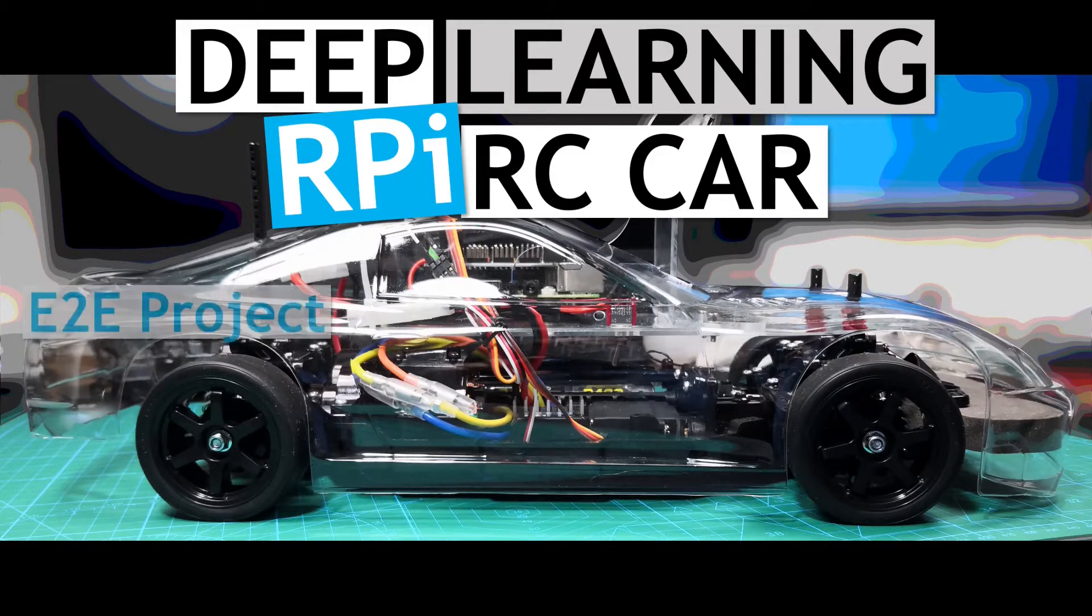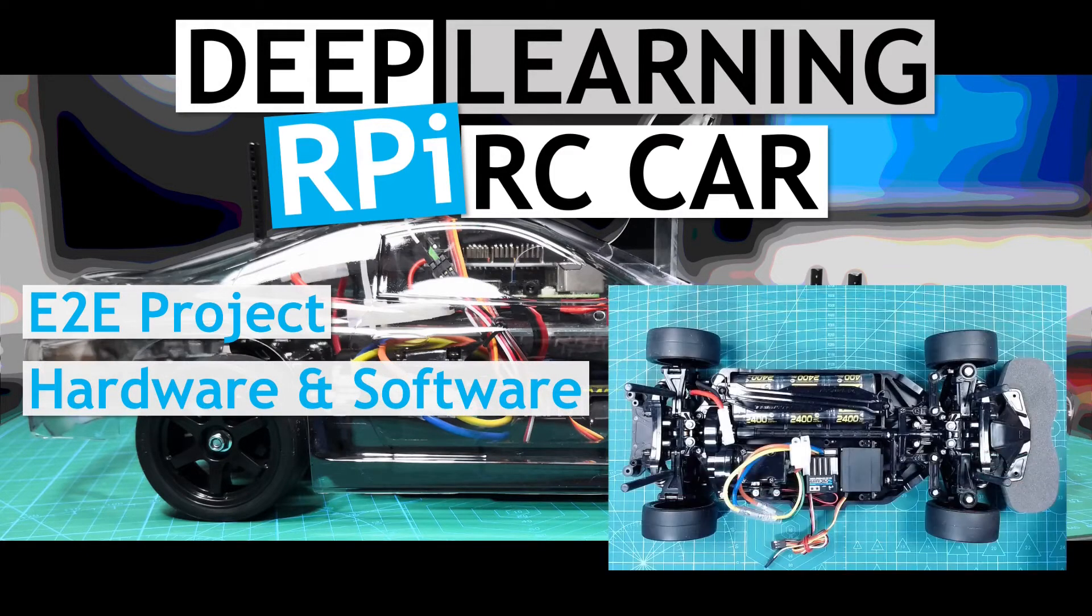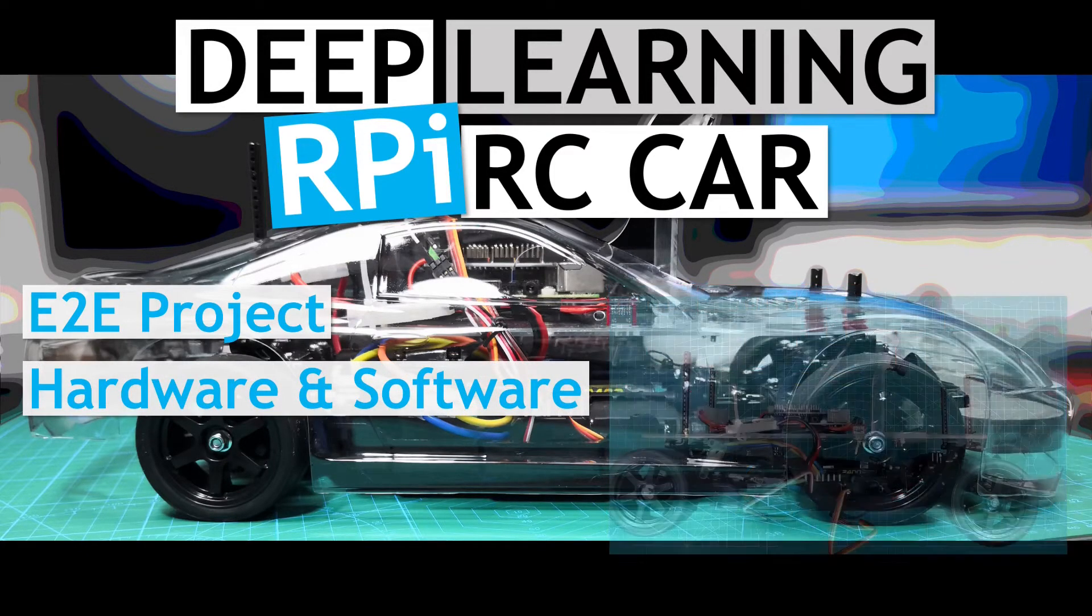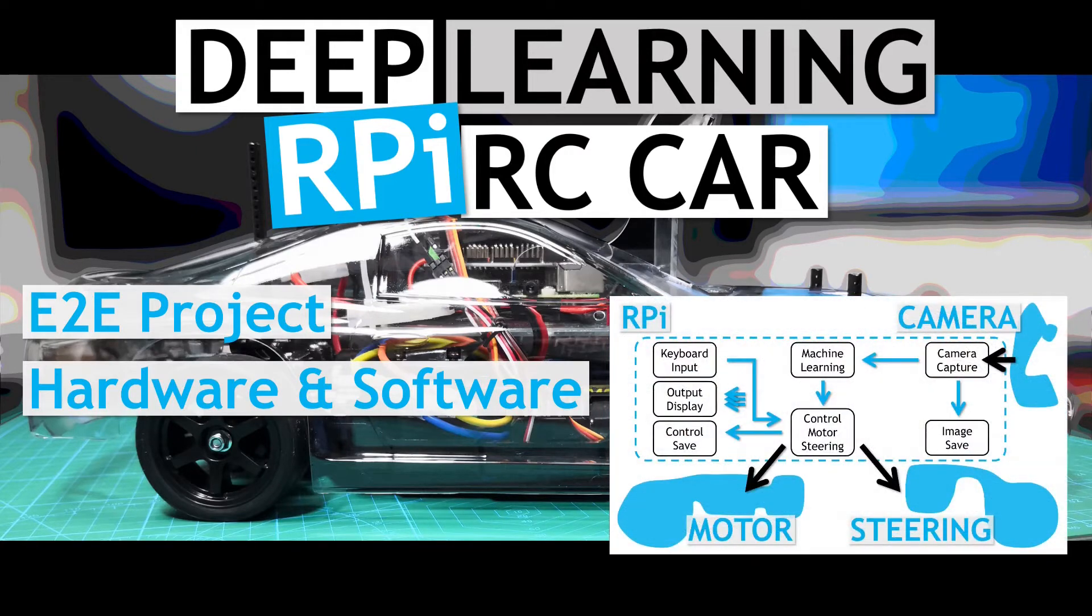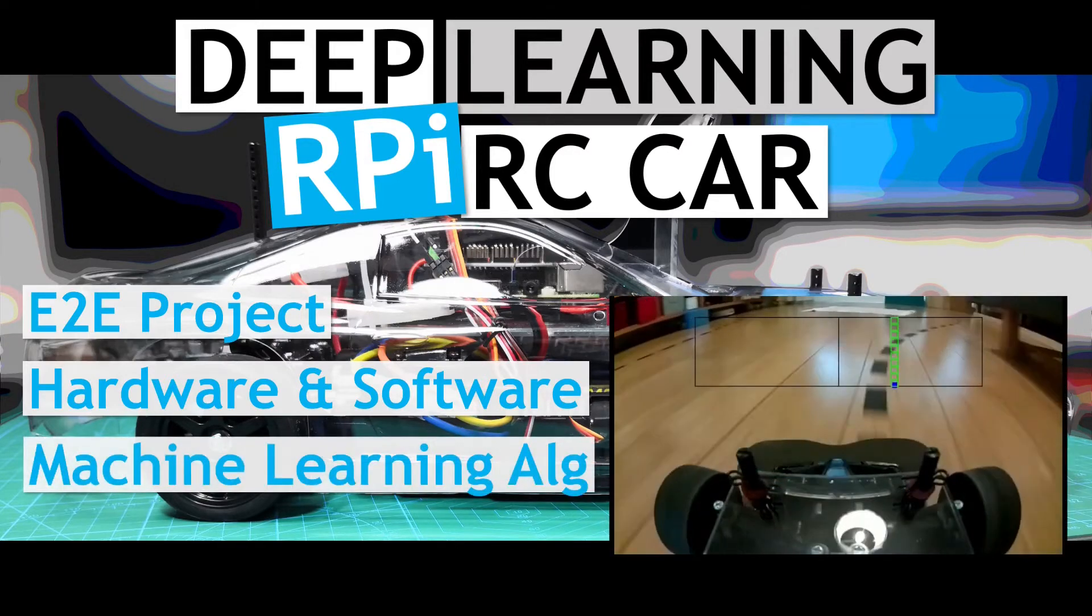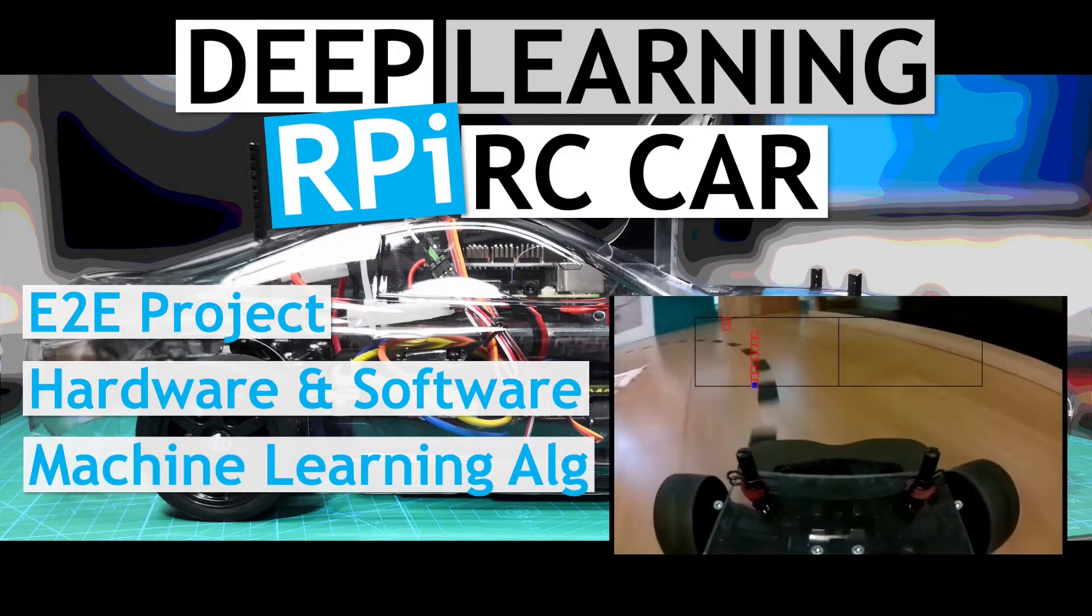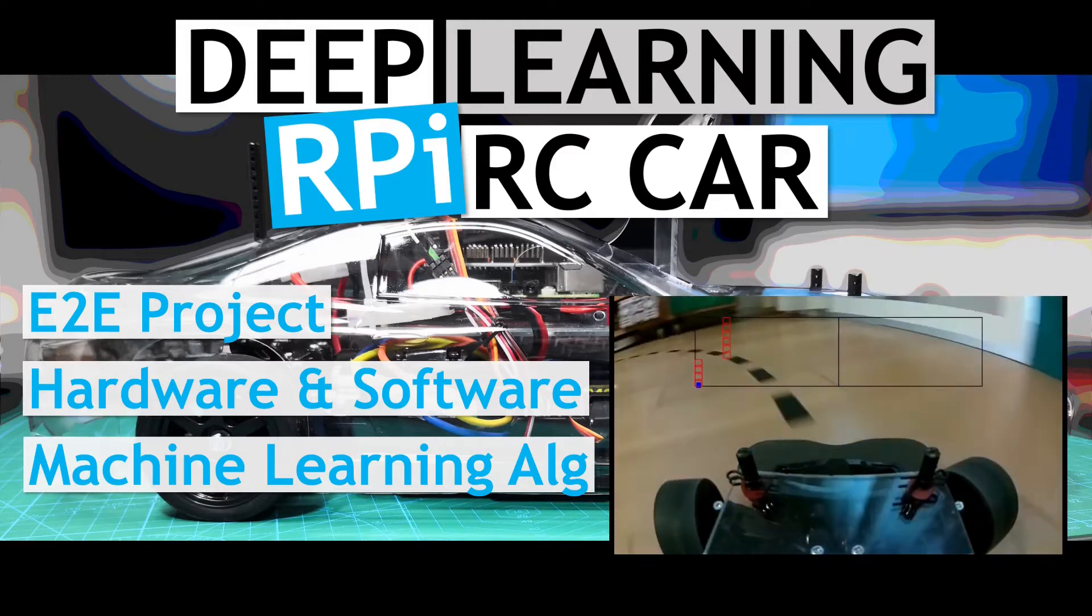The project will cover the system from end to end, from building the hardware, the base RC chassis, and attaching the Raspberry Pi and the associated electronics, and then getting it all working. It then works through the planning and development of the software that controls it all, as well as the training and testing of various machine learning algorithms to see how well they go at line following.